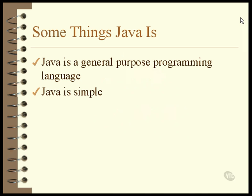There are only a very few fundamental data types and very few Java keywords to manipulate them. Java programs are generally simple in the sense that they are written as a collection of small methods. A method is a named collection of executable commands. Java is scalable because it can be used for everything from embedded chips and portable devices to programs that run on mainframe computers and manage networks. This is really a function of it being a general purpose language, but Java scales better than many other general purpose languages.